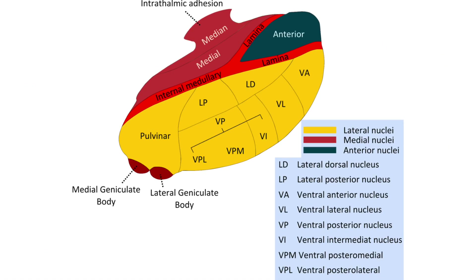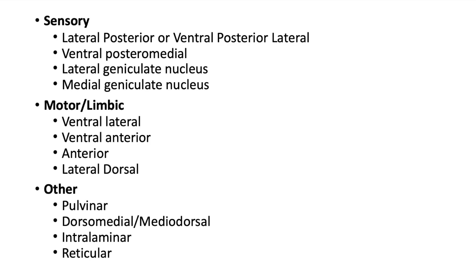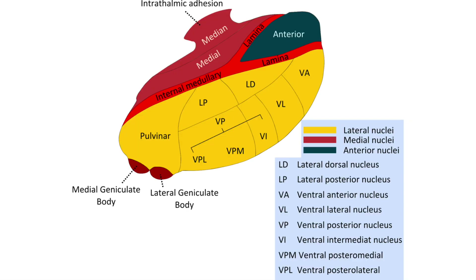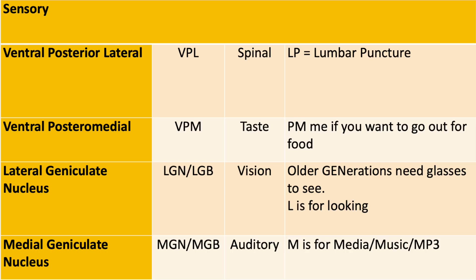The thalamic nuclei are organized into different groups — lateral, medial, and anterior — but you can also organize them by function. Let's start by learning the thalamic nuclei with sensory functions, beginning with VPL and VPM.